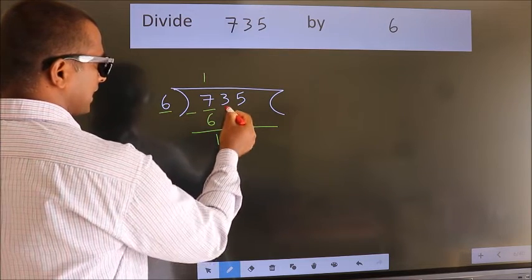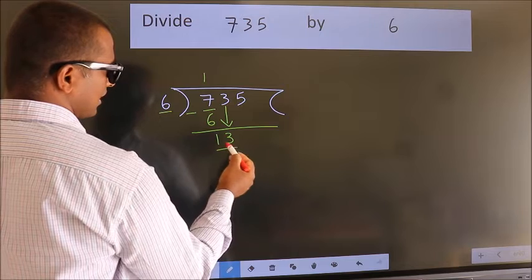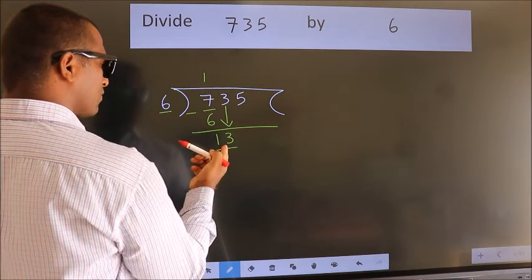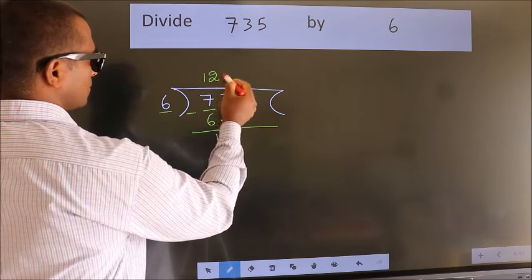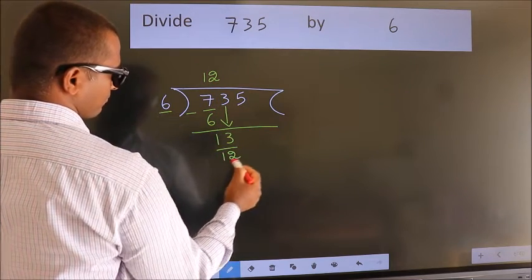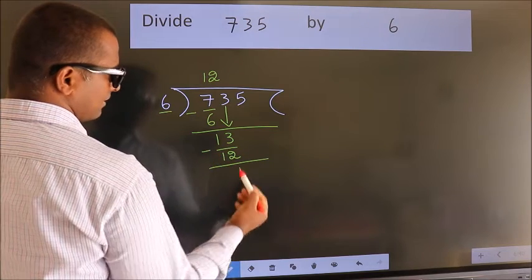After this, bring down the next number. So 3 comes down. So 13. A number close to 13 in the 6 table is 6 times 2, which is 12. Now we subtract. We get 1.